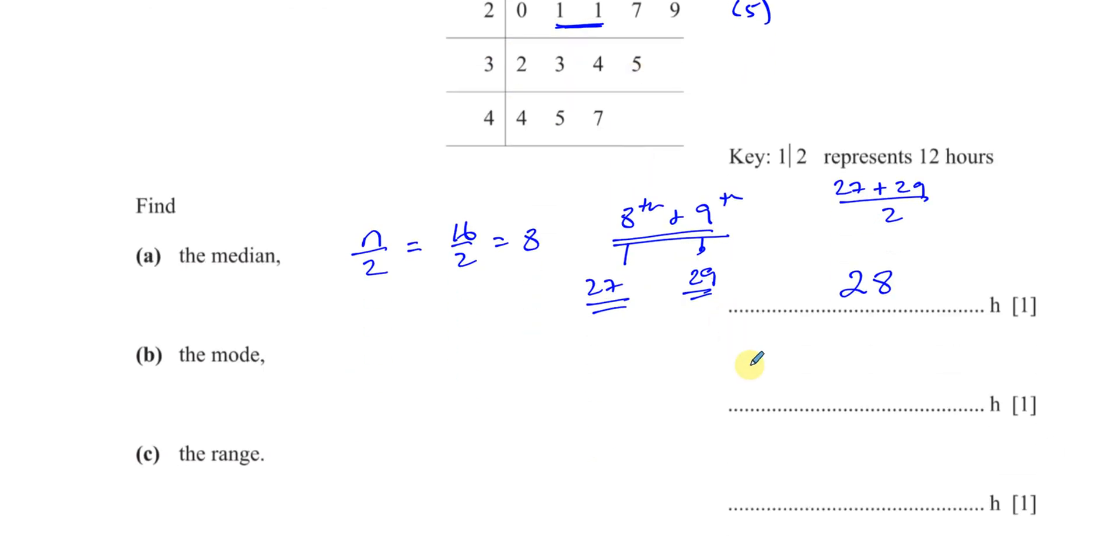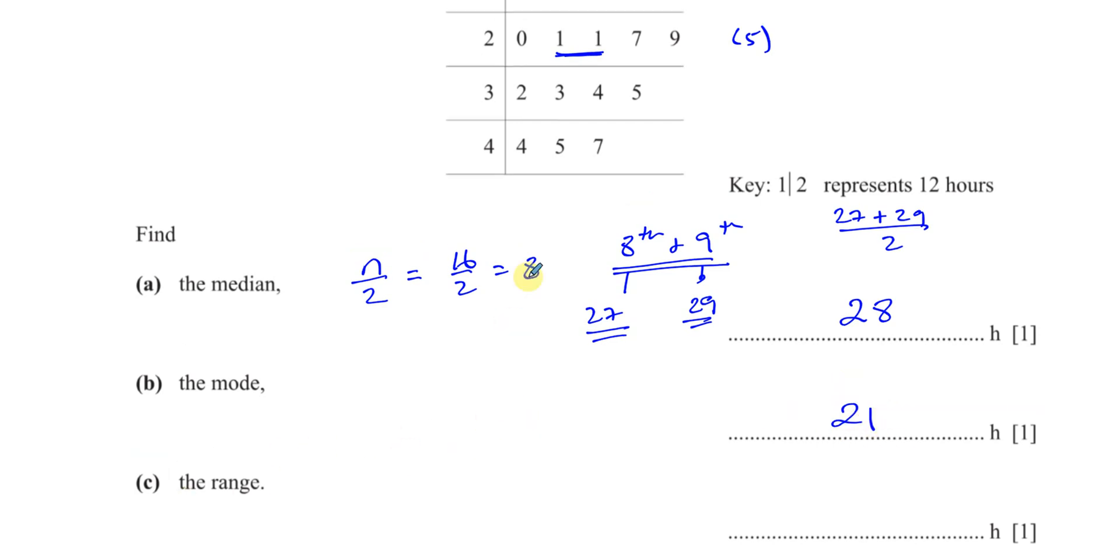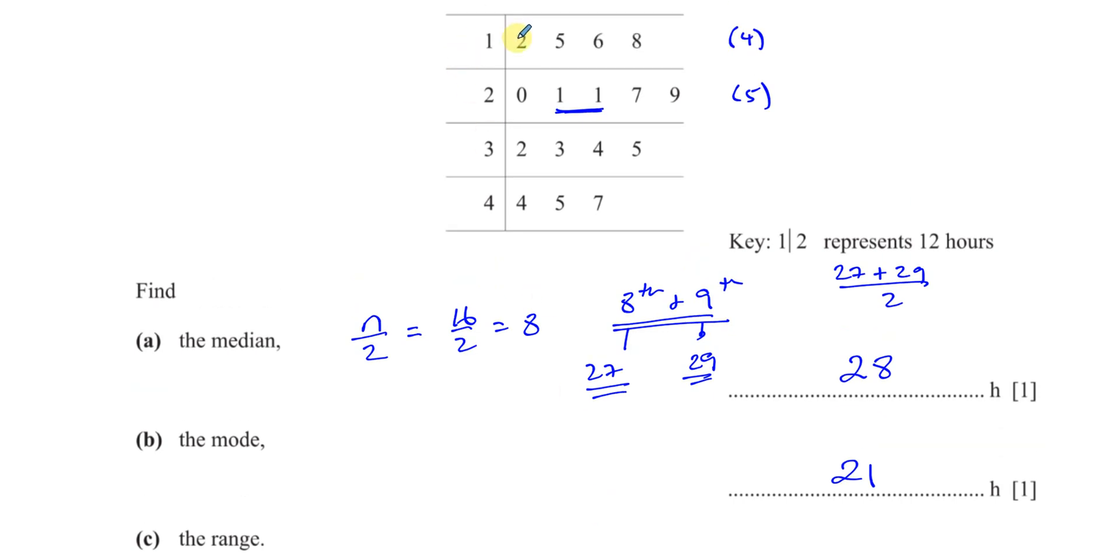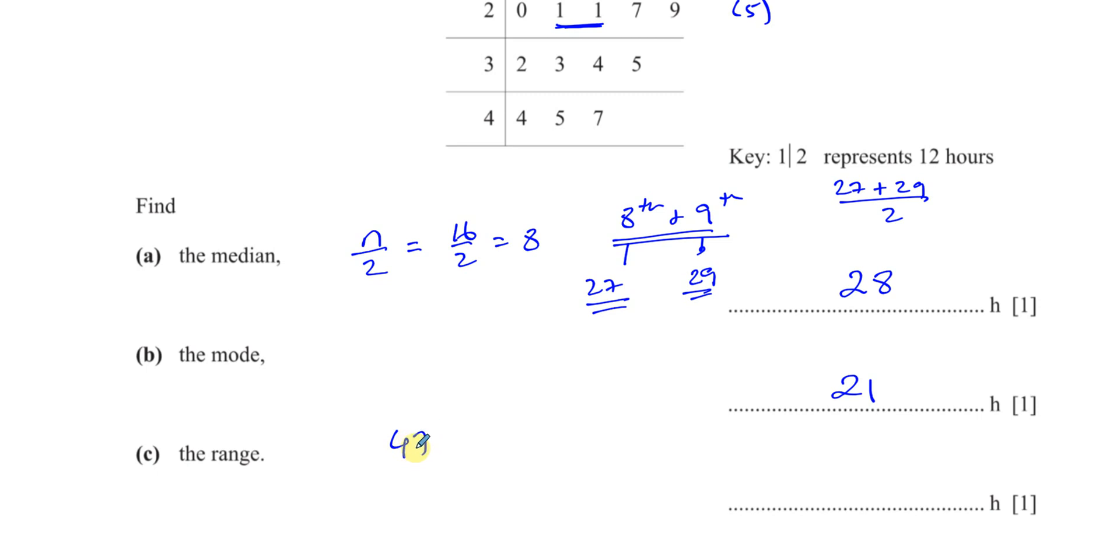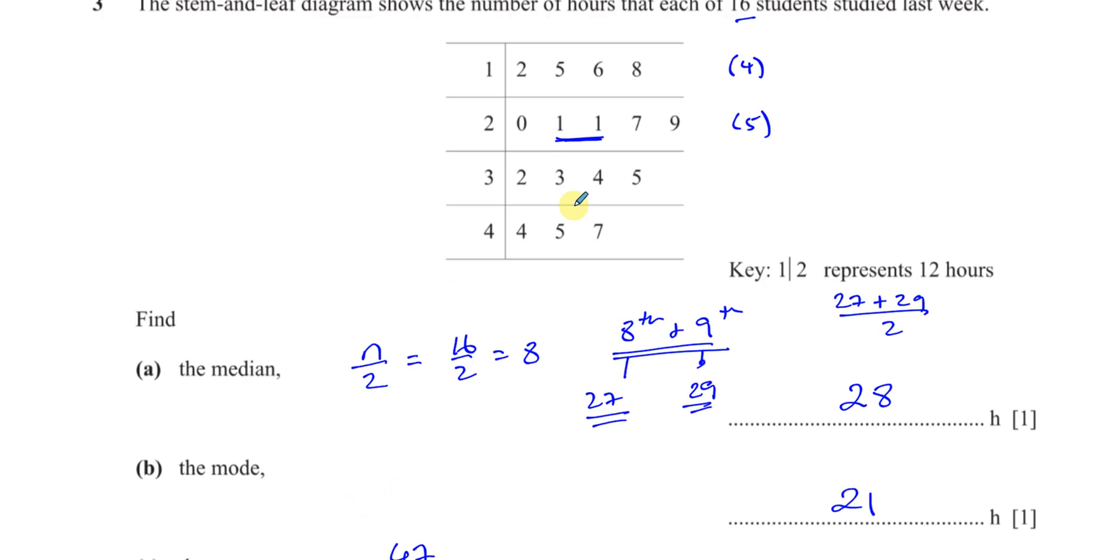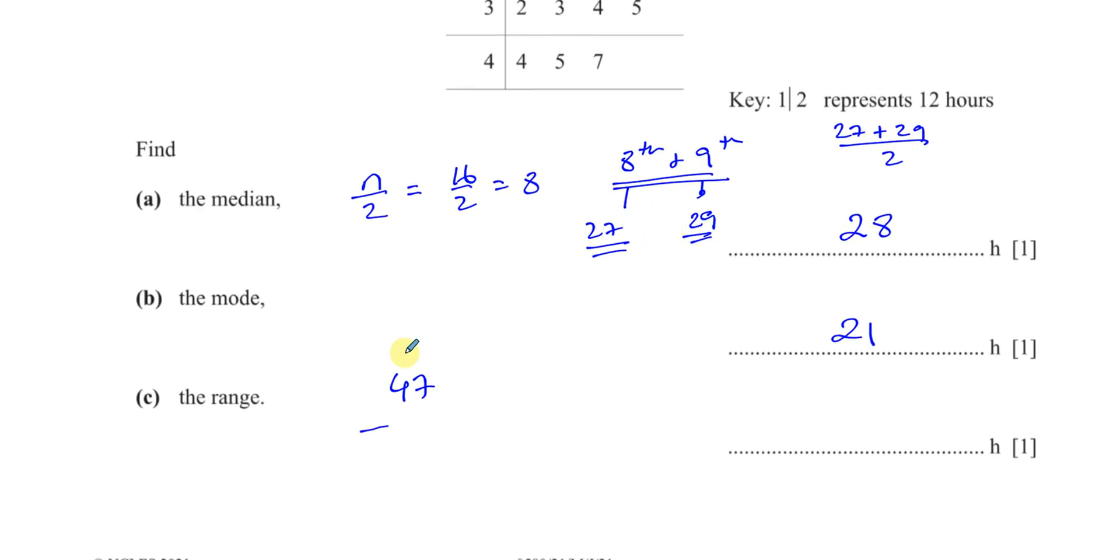And then the range is simply the largest number and take away the smallest number. You can see that the largest number is 47 and the smallest number is 12. So 47 minus 12, that gives you 35. So that is the range.